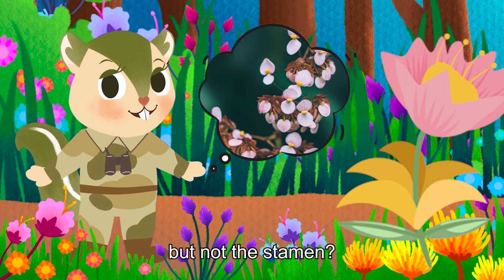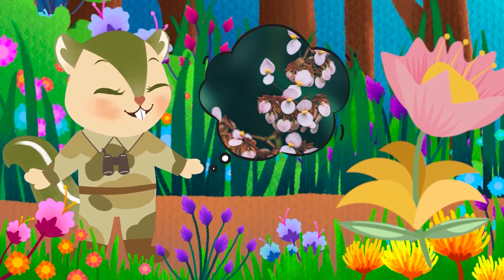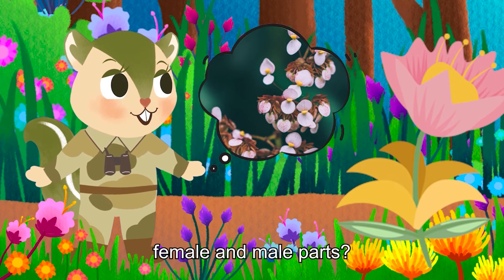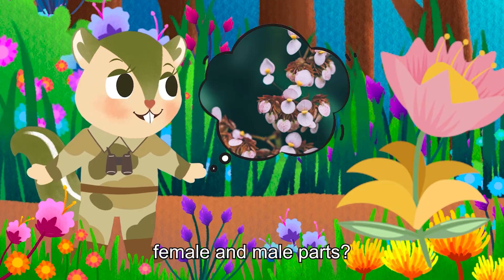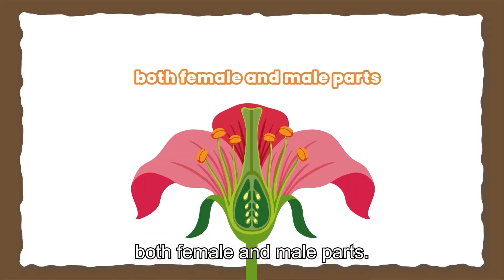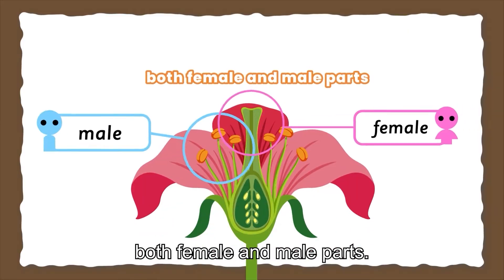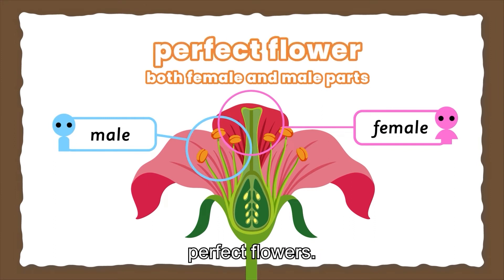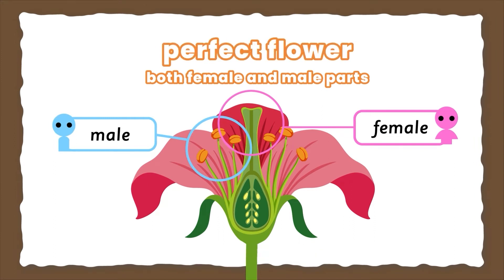But not the stamen. I thought plants have both female and male parts. In most plants, flowers contain both female and male parts. These flowers are classified as perfect flowers.